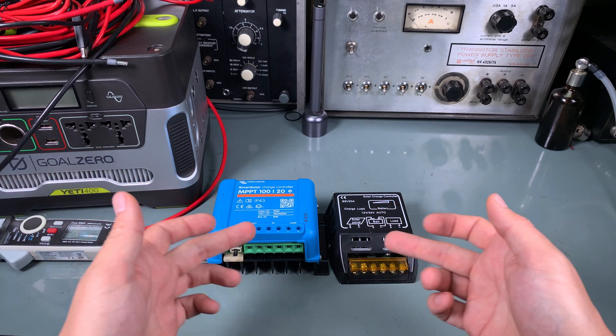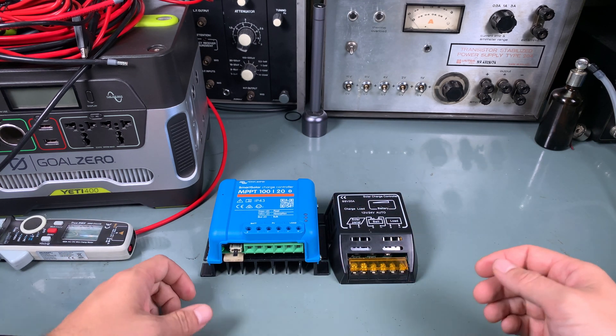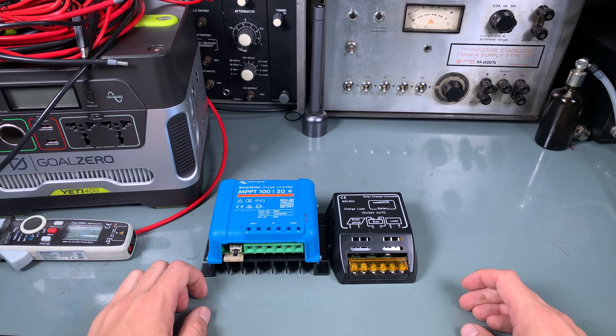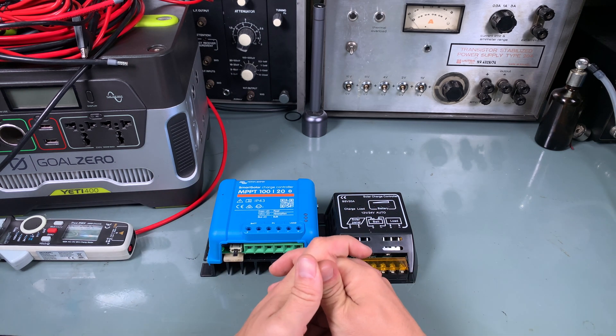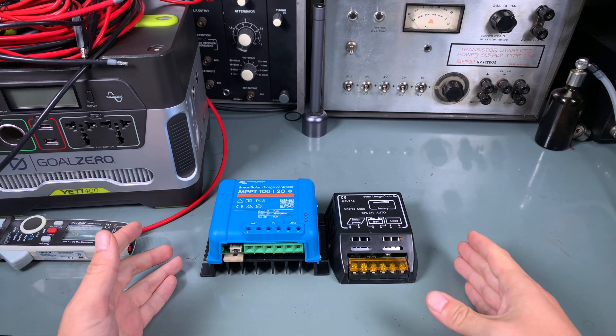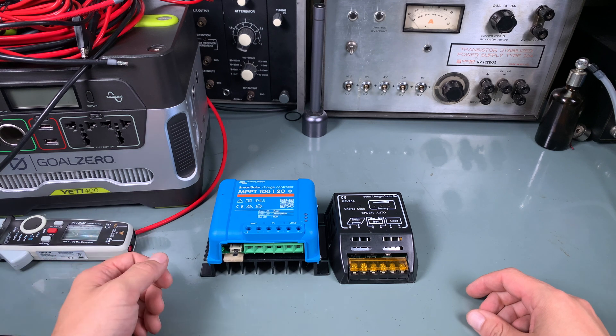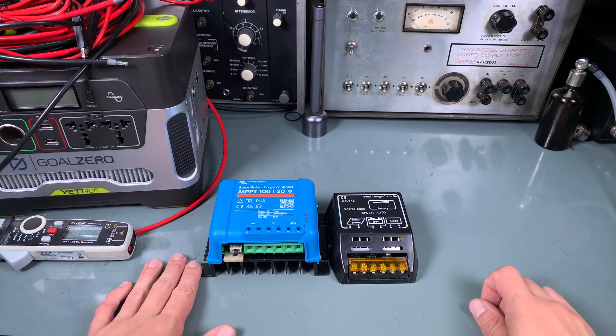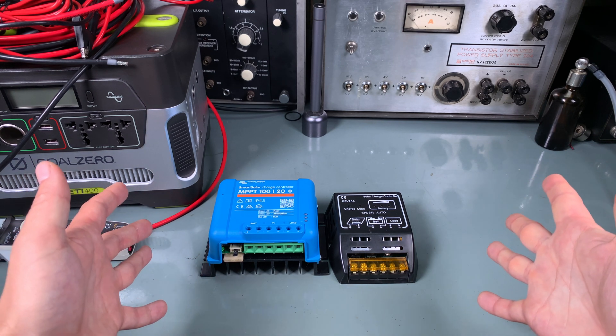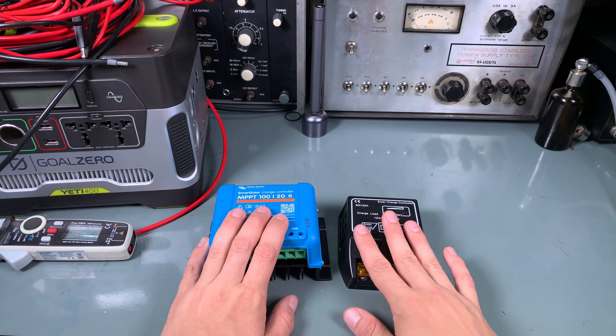Other modern example might be chargers with a desulfation process because they are going to be feeding your battery with high voltage to allow the sulfate to break like high voltage pulses and it doesn't really matter for the battery.